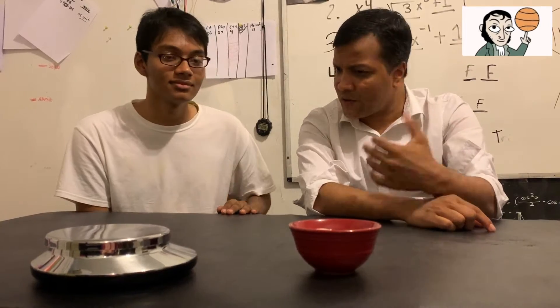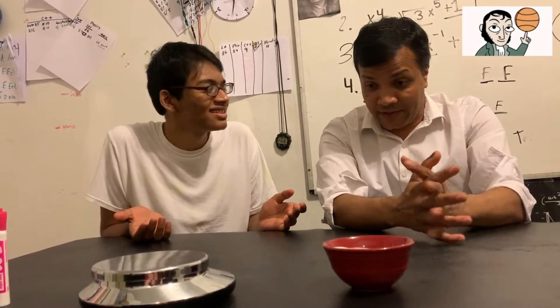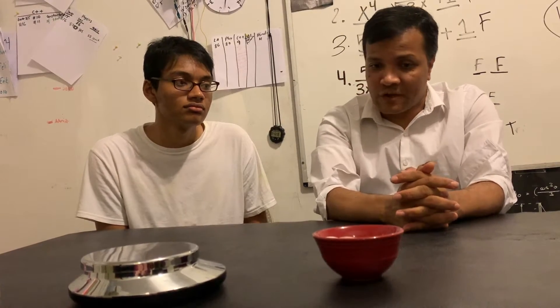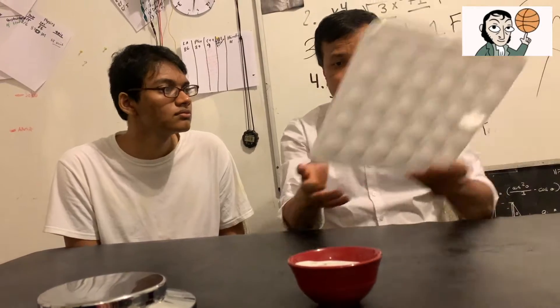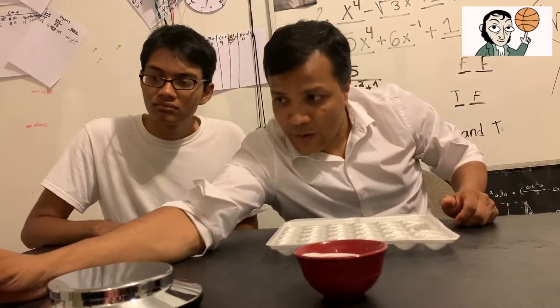Today we're going to learn amount of substance and the SI unit for amount of substance is mole. But wait — what is a mole? What is amount of substance? Amount of substance is like the amount of things. For example, the number of eggs.